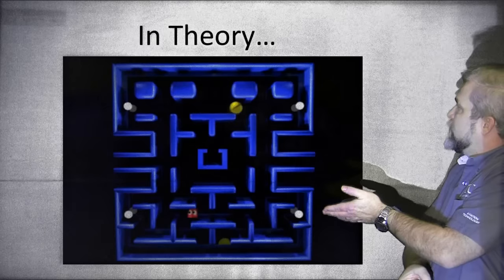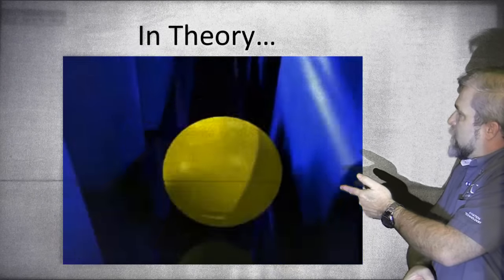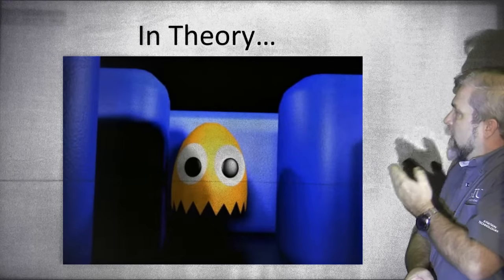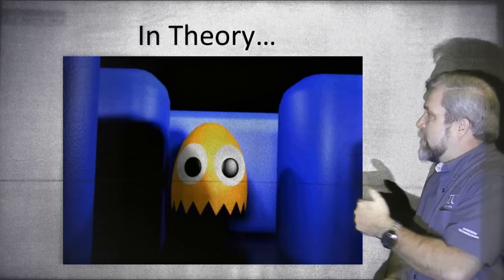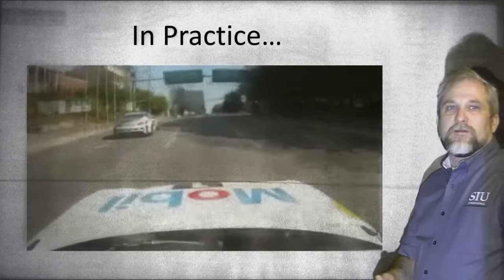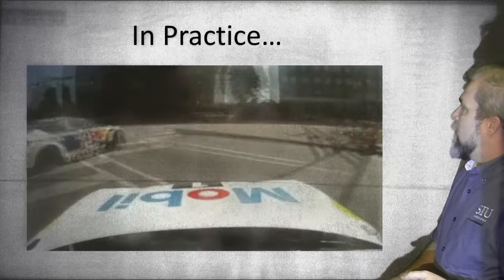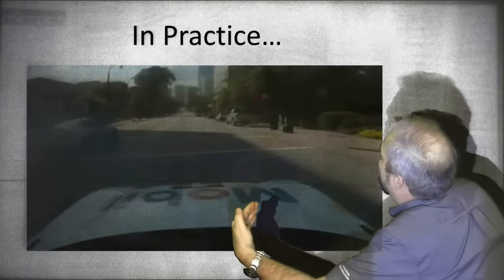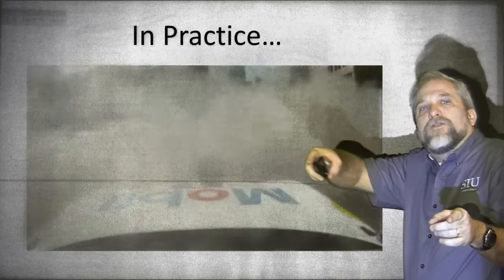What does Pac-Man have to do with bending metal? Notice the corners on Pac-Man — how abrupt they are. They're like our theoretical metal bends, where something is moving one way and then suddenly, bam, we move the other way. But you know that's very theoretical. In the real world, corners don't happen that way. Corners are round.